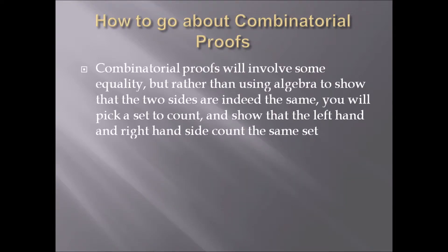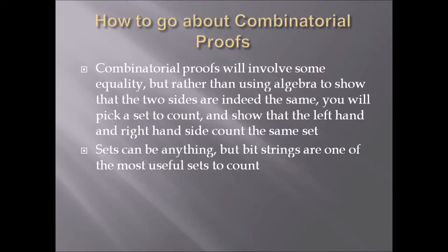Combinatorial proofs involve some equality, but rather than using algebra to show that the two sides are the same, you pick a set to count and show that the left-hand and right-hand side count the same set. Sets can be anything, but bit strings are one of the most useful sets to count. In the examples I work, I'll use bit strings, but I'll also have an example where I choose a different kind of set.